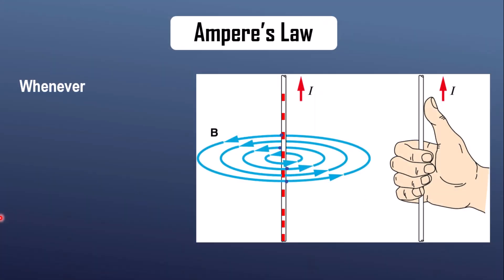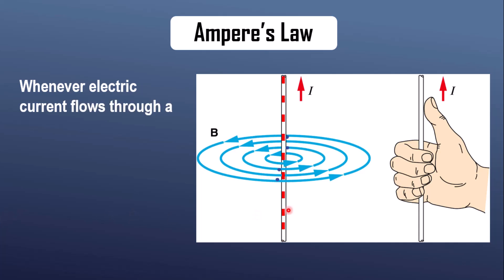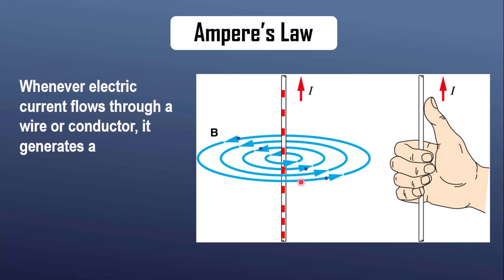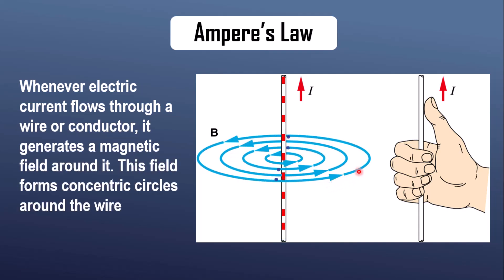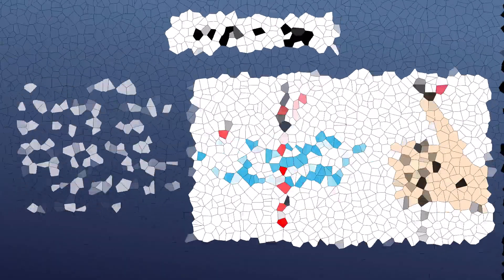Whenever electric current or DC current flows through a wire or conductor, it generates a magnetic field around it. This field forms concentric circles around the wire.